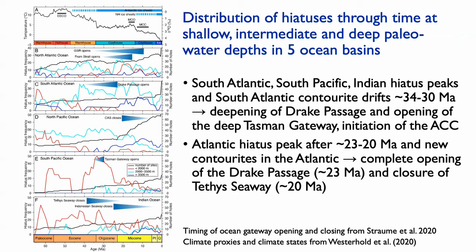The beginning of the Miocene is marked by an increase of hiatuses in the South and North Atlantic, accompanied by new contourite drifts in the Norwegian Greenland Sea, the Equatorial Atlantic and the Scotia Sea, representing nearby sites of deposition of eroded material. We link these hiatus peaks to the complete opening of the Drake Passage and the closure of the Tethys seaway, which have been shown to enhance the Antarctic Circumpolar Current and the Proto-Atlantic meridional ocean circulation.